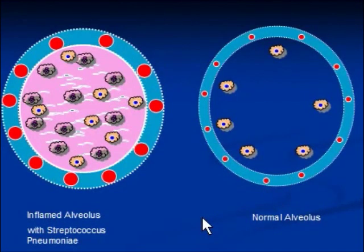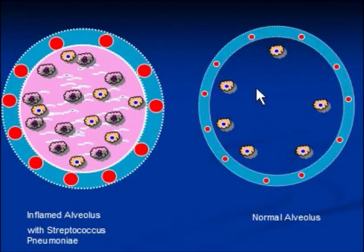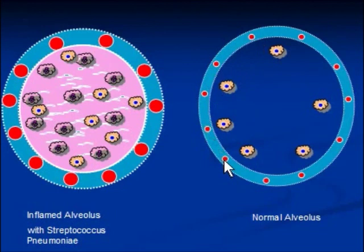Let me show you a few sketches and describe the process again. This is a cross-section of a normal alveolus, which is filled with air, and macrophages are always present. These red structures are tiny blood vessels that surround the alveoli. This is an infected and inflamed alveolus.